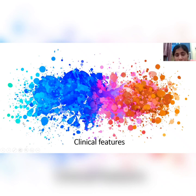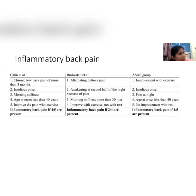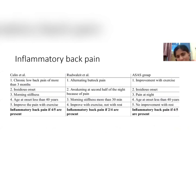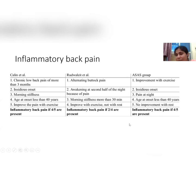Inflammatory back pain is a very important component of spondyloarthropathy. The ASAS definition requires back onset in a patient who has had pain, with age of onset less than 40 years. Characteristics are: pain improves with exercise but not with rest, and pain is predominantly severe at night. If any four of these characteristics are present, the pain is called inflammatory back pain.